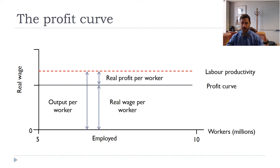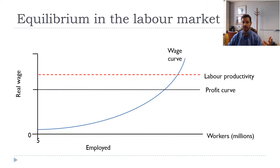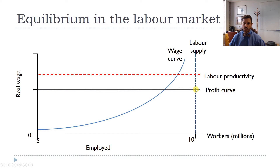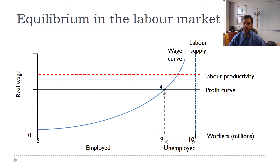We've now determined the real wage, which comes from labor productivity and the profit curve, but we don't yet know how many workers are working. For that we need the wage curve — the intersection of the wage curve and the profit curve tells us how many people are employed and how many are unemployed. That's our equilibrium, and it always has some excess supply of labor that can grow or shrink depending on the business cycle. Here we can see the distance between the dotted blue line and the wage curve along the profit curve gives us the number of people involuntarily unemployed. In this case, we have 9 million employed at point A out of 10 million who would like to work, so 1 million people are involuntarily unemployed.